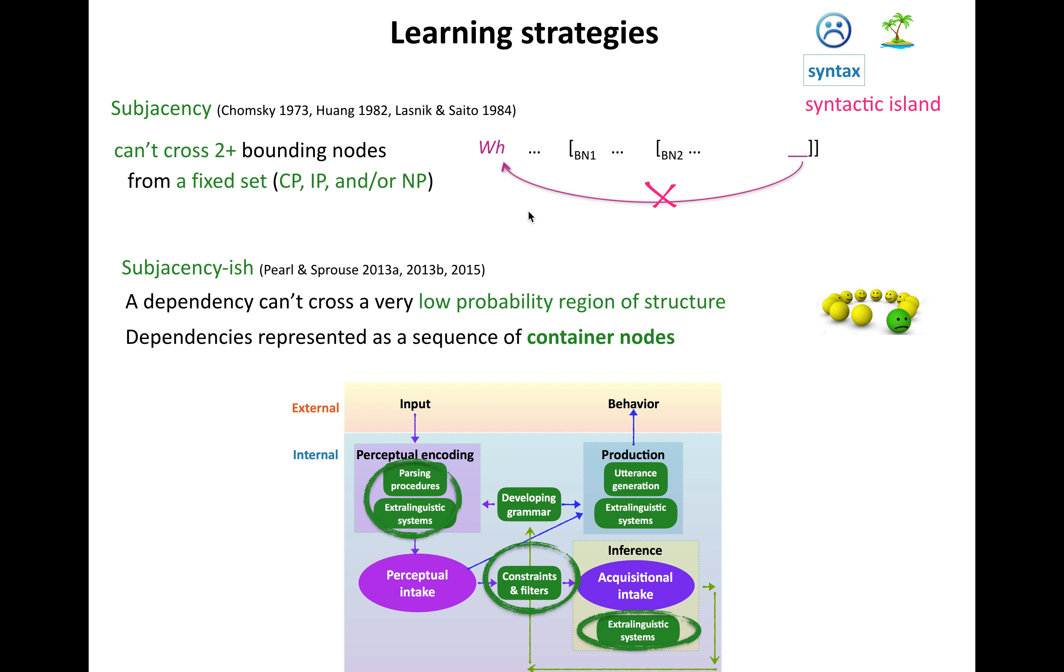So in contrast to subjacency, which was a theory that said, here's how syntactic islands work, you just know that there are these fixed set of bounding nodes in your language. You have to kind of figure out which ones they are, but you know you have them, and you know you can't cross two or more of them.